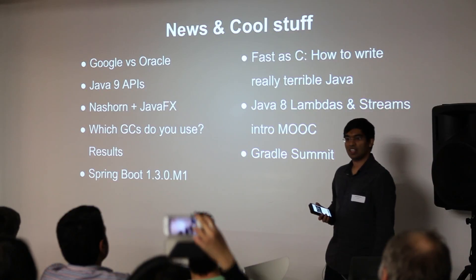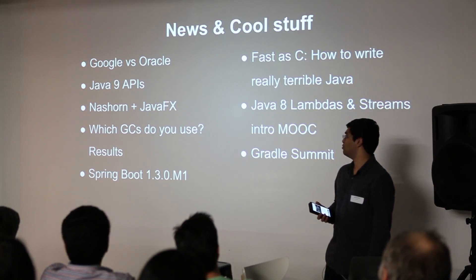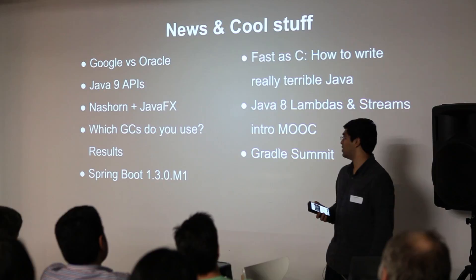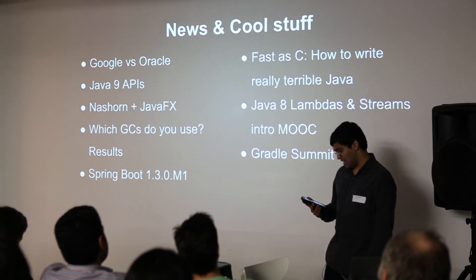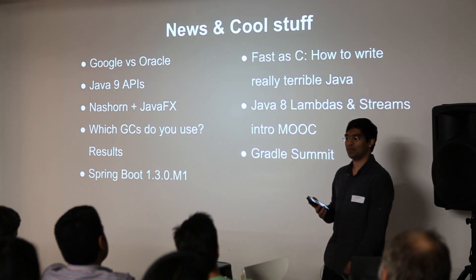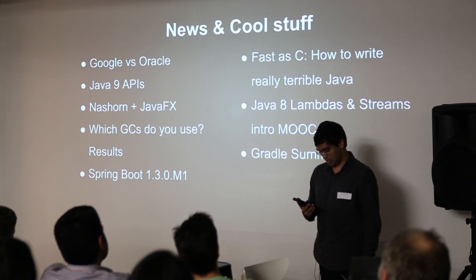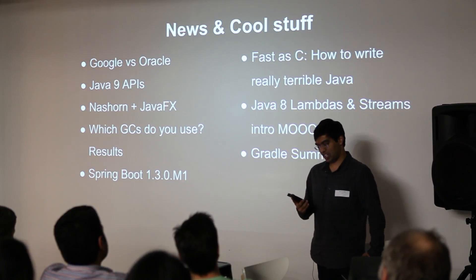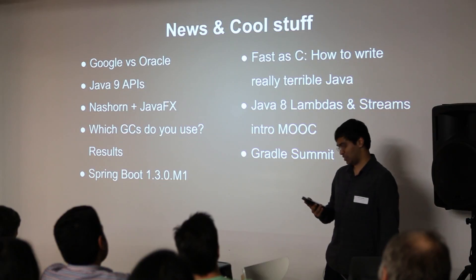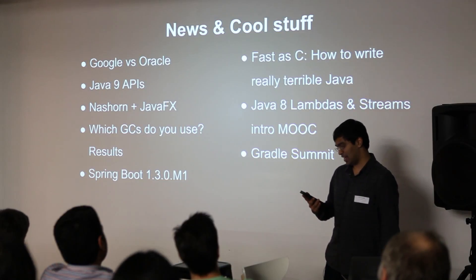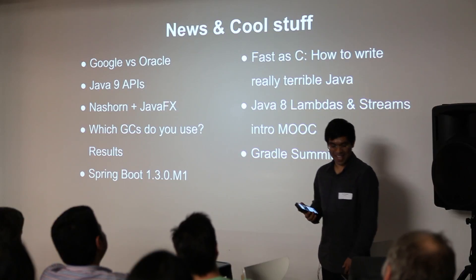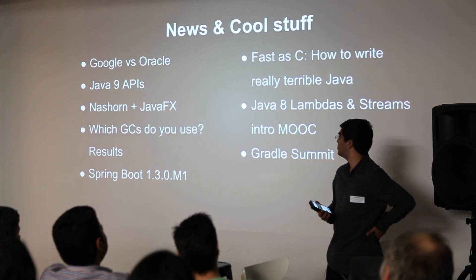A little while ago we did a GC poll at MelbJVM, and we got the results in. Apparently 39% of people use the default garbage collector, CMS 24%, G1 11%, Parallel 5%, and 21% of you don't know. So it might be worth looking it up.